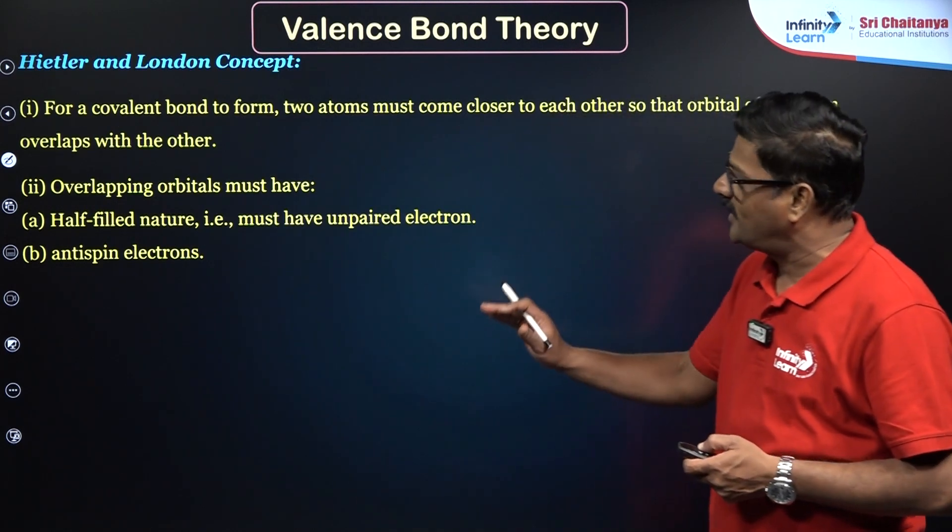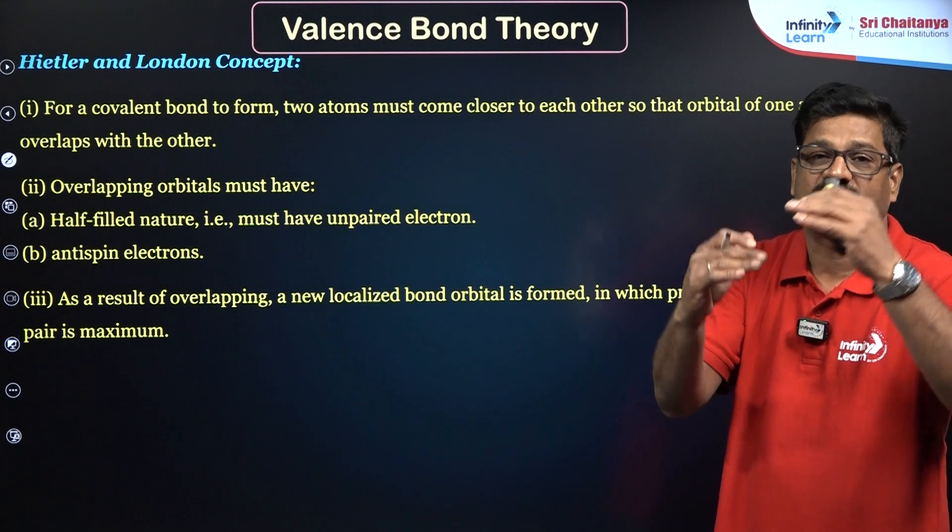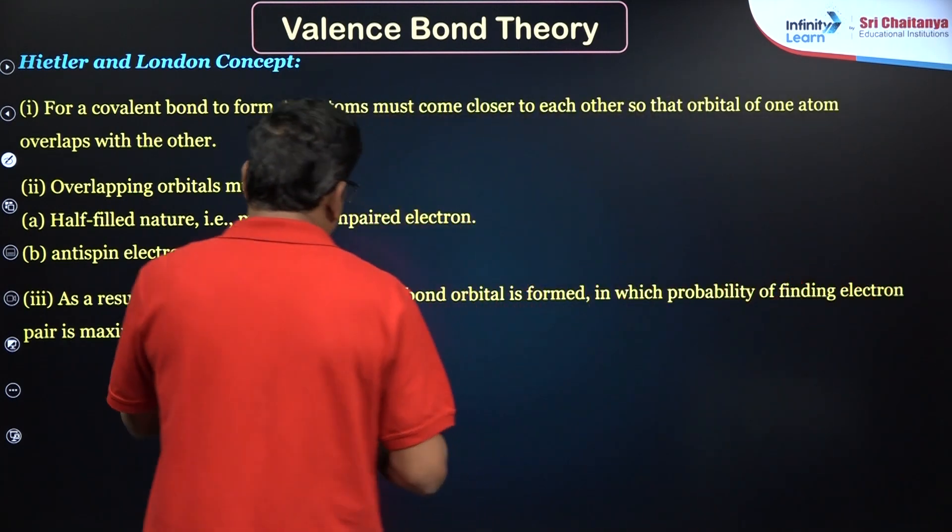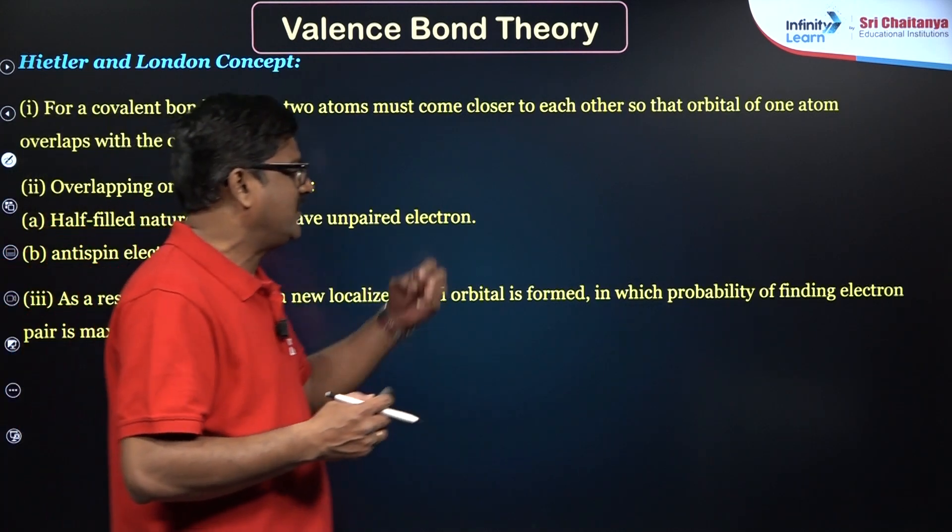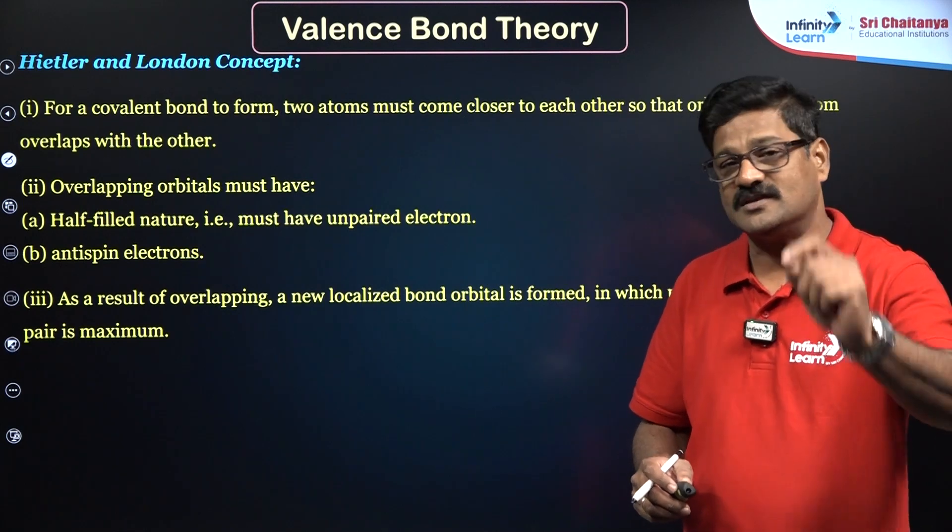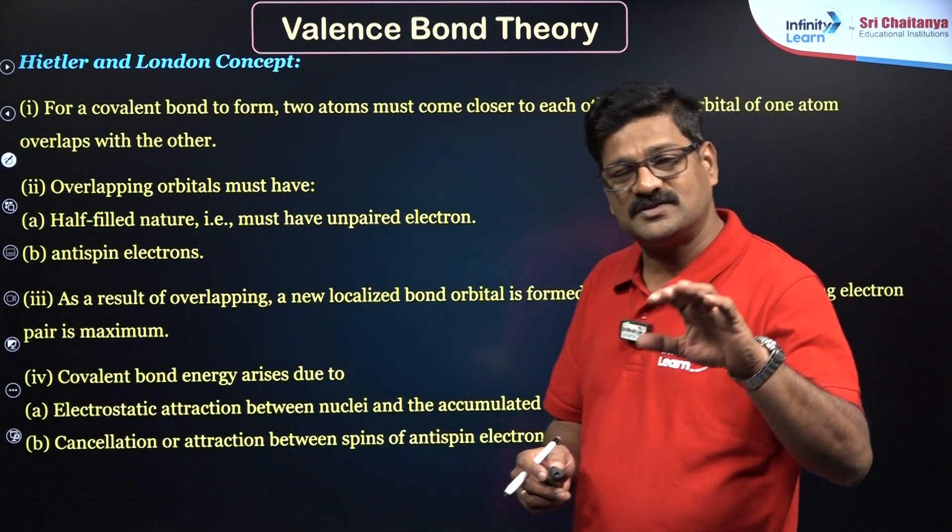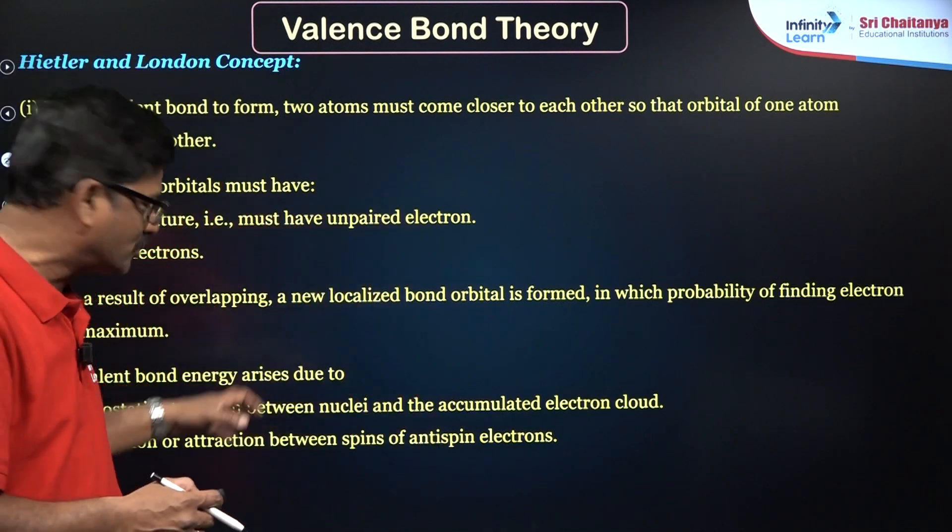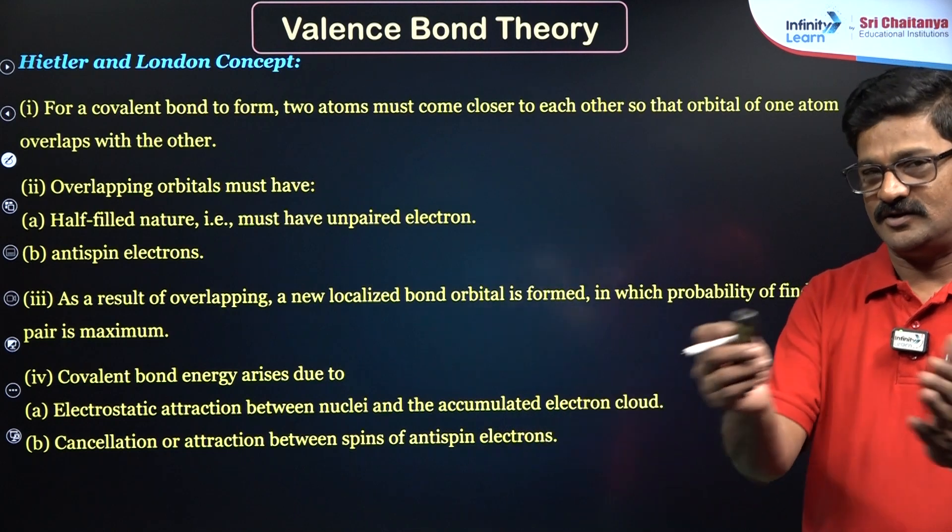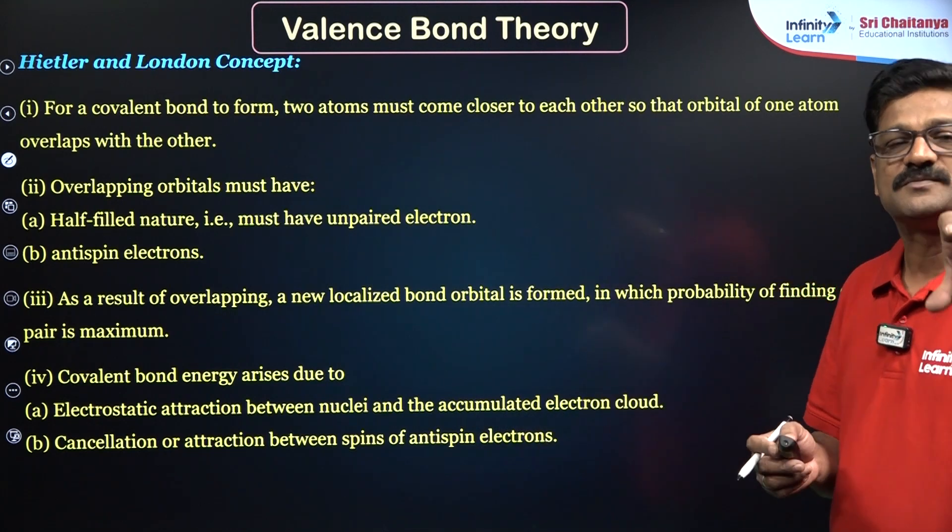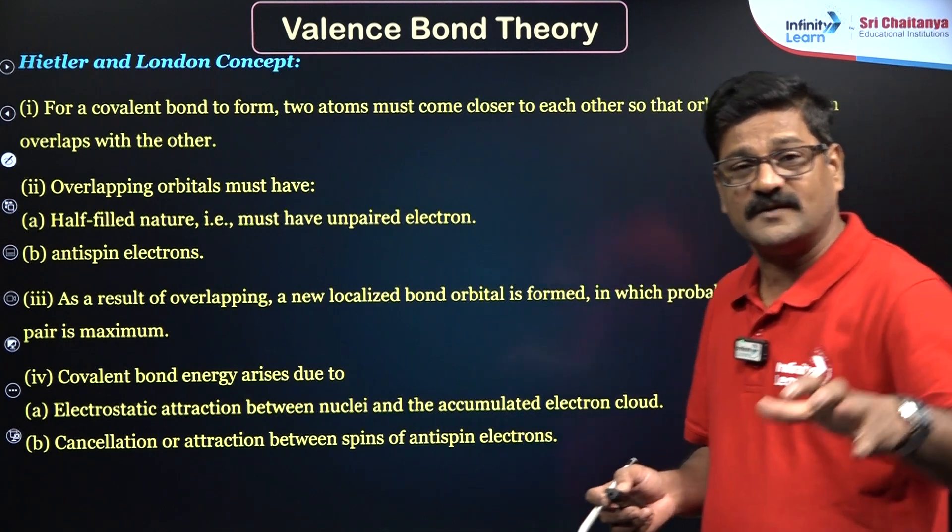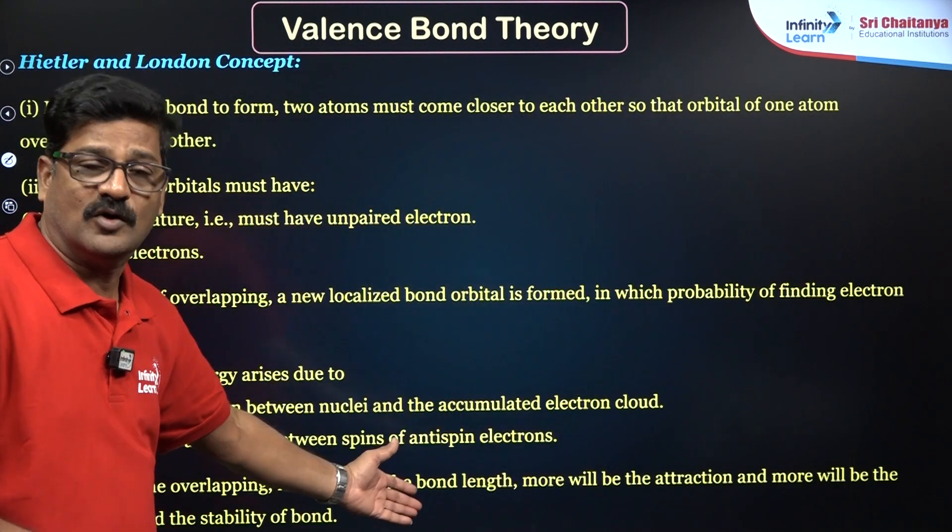Heitler and London concept: for a covalent bond to form, atoms must come close to each other. The atoms should have unpaired electrons and the orbitals of the unpaired electrons should overlap to give rise to covalent bonds. And this overlapping orbital must be half-filled and they should have opposite spin, and they should have an appropriate orientation and appropriate energy.